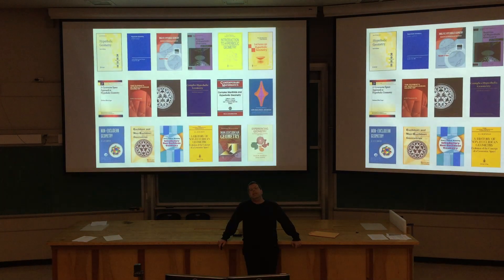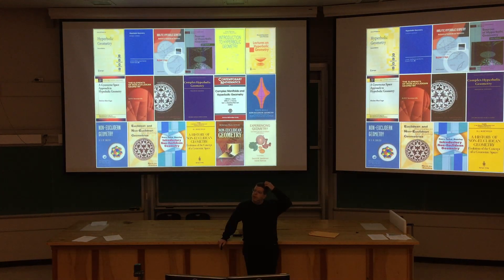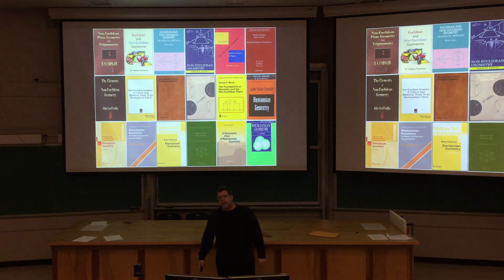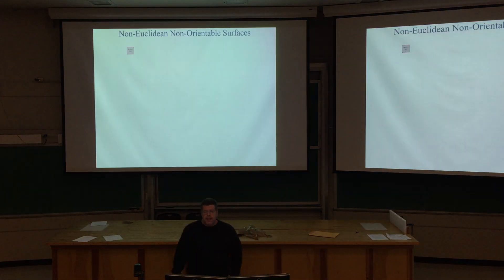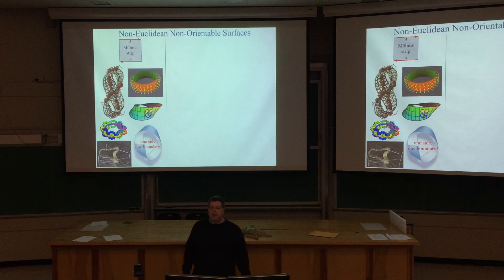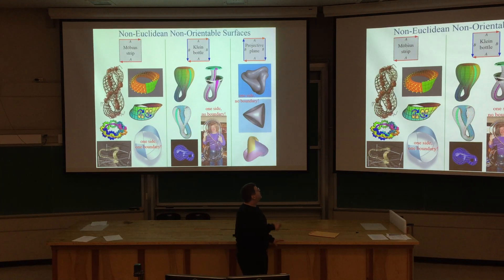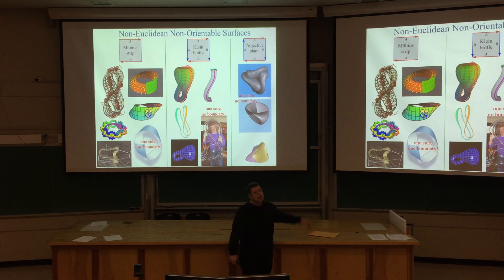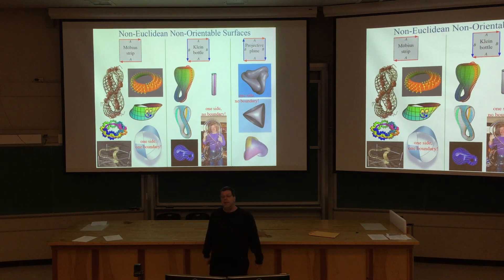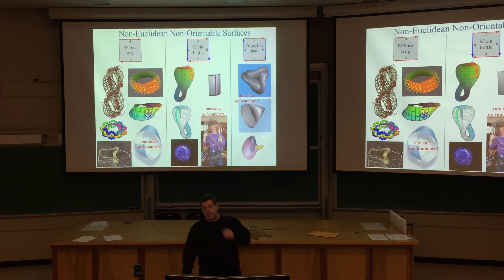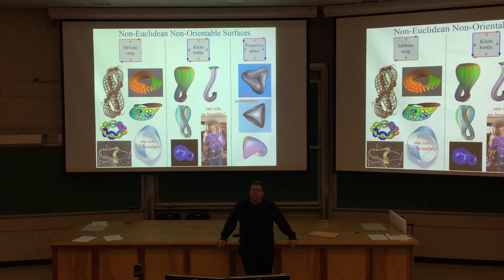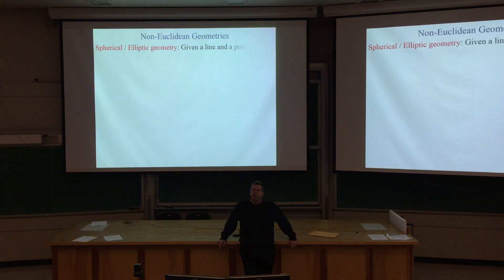Many books have been written about these topics — it's a very prolific area of mathematics. Non-Euclidean geometry gives rise to all sorts of interesting manifolds, such as Klein bottles, Möbius strips, and projective planes. These are just the three-dimensional ones embedded in 3D, and there are many higher-dimensional variations with peculiar properties.